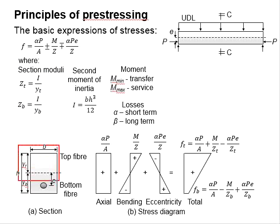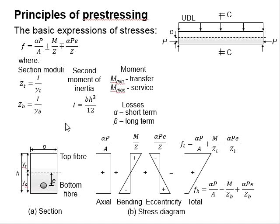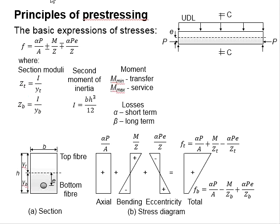For a rectangular section or sections which are symmetrical top and bottom, the section moduli at the top and the bottom will be the same. In the case that the section is not symmetrical from top to bottom, the z-top will be different from z-bottom, and thus it shall be carefully used.